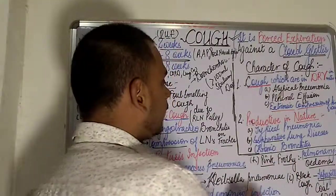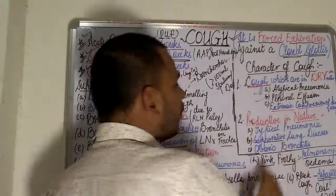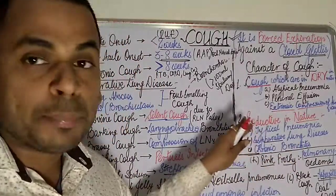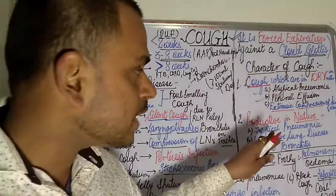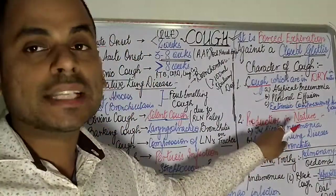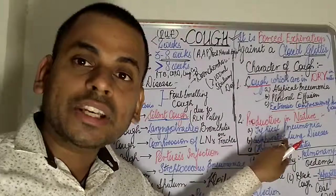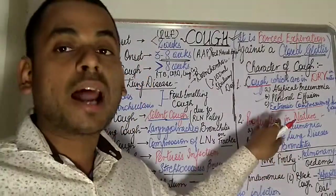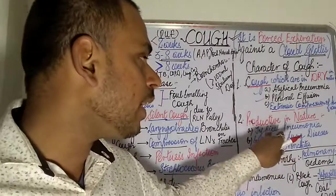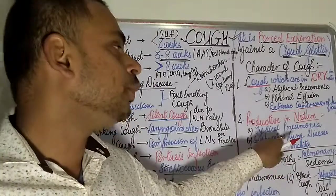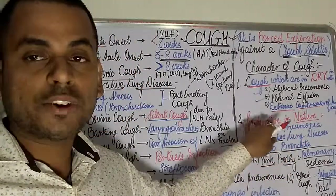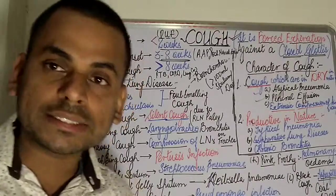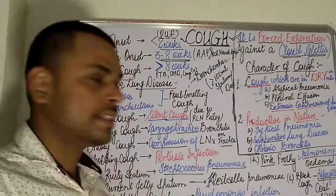Productive cough is present in typical pneumonia, where nasal secretions are particularly present in the alveoli, as well as in suppurative lung disease and in chronic bronchitis.